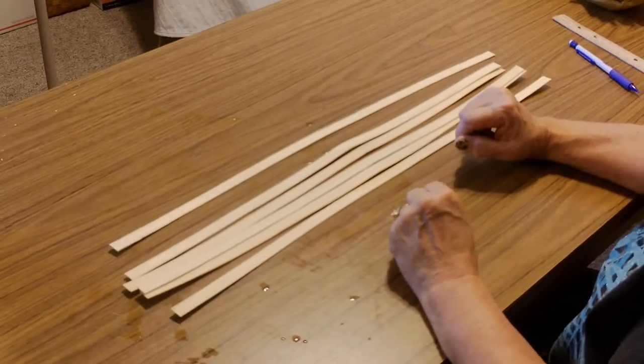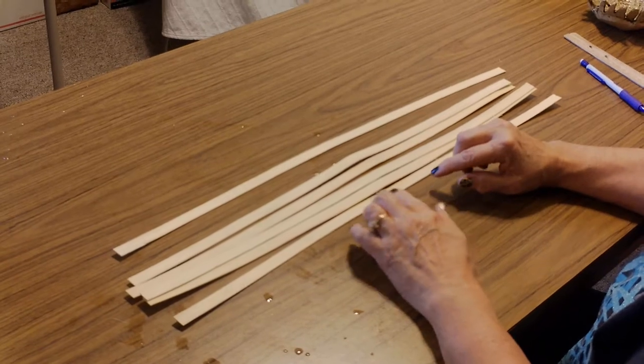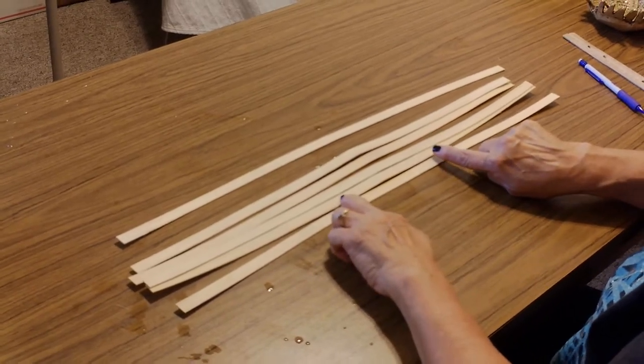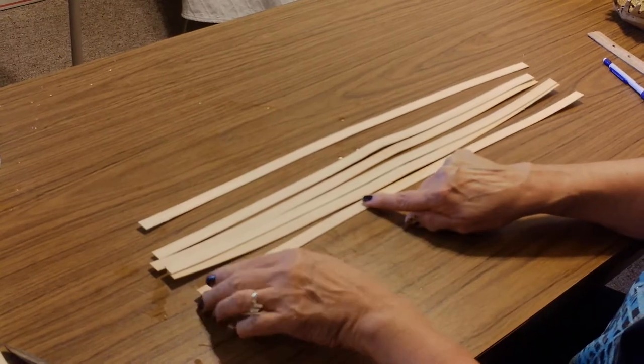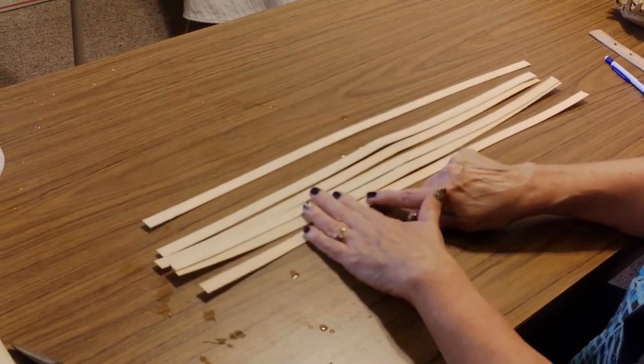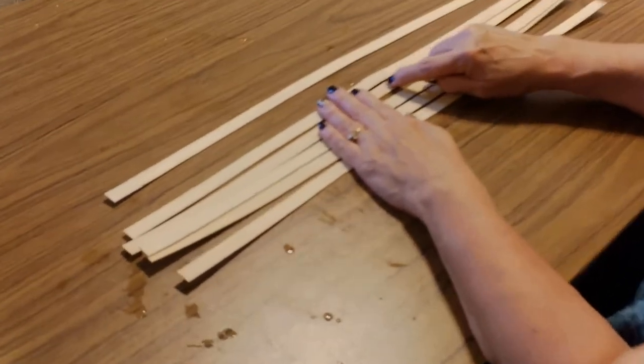To make a round basket, I have cut the spokes the length that I want them, taking into account the base and then for the height when I turn these up. I have already marked the centers of these five, so I'm going to do that again.